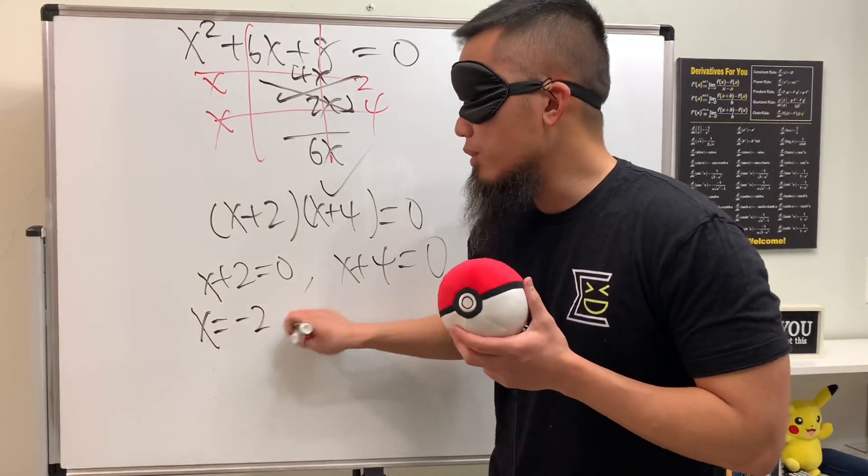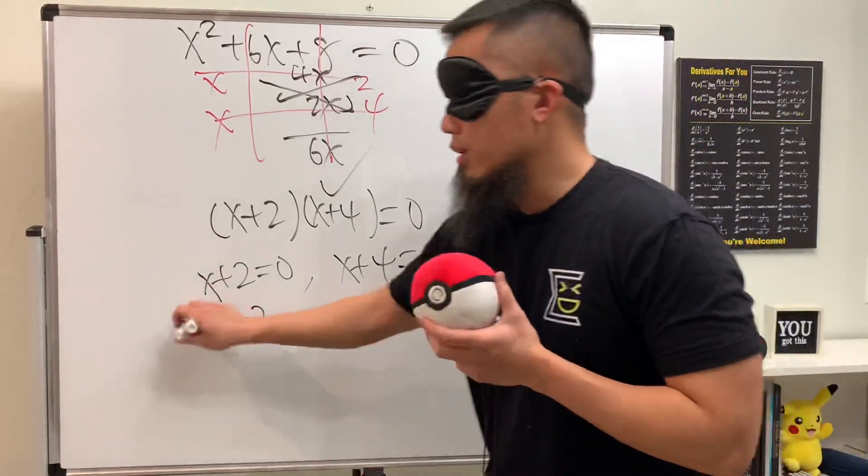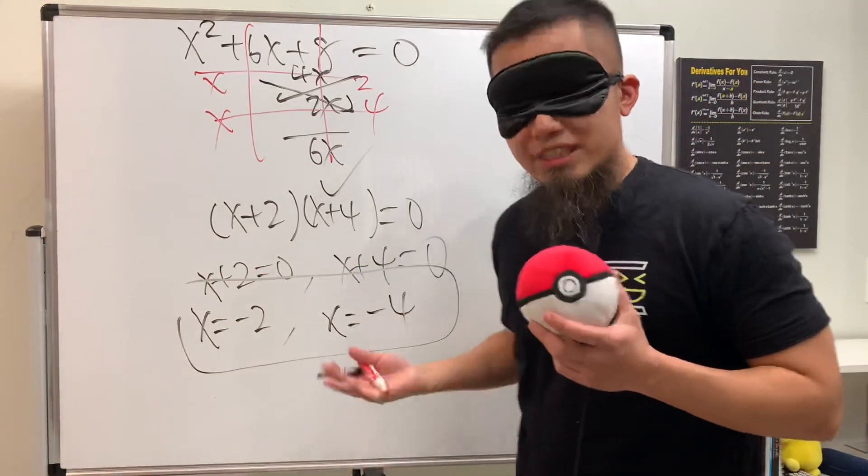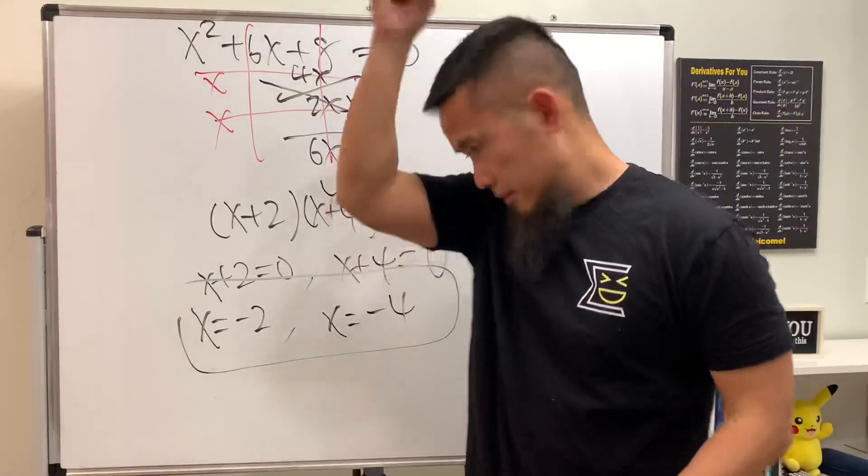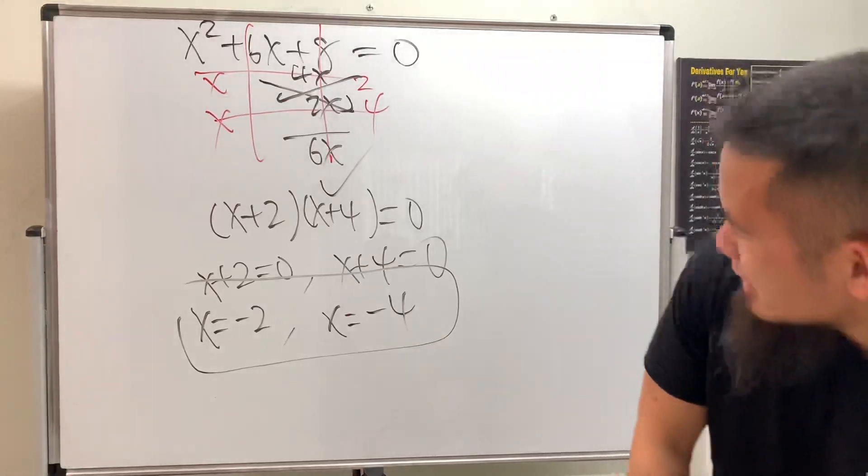And then for the second one, minus 4 on both sides, so we get x = -4. All together, this is it. Not bad!